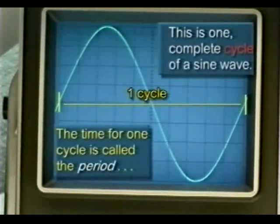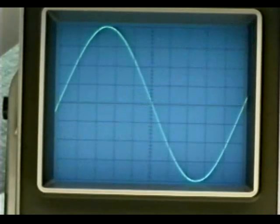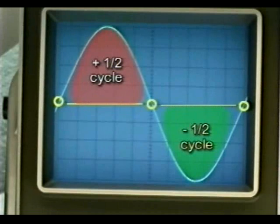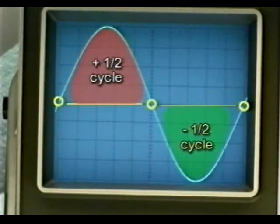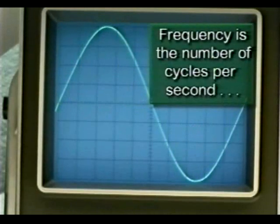The time needed to complete one full cycle is called the signal's period. The period of the waveform is measured in seconds, but could be measured in milliseconds, microseconds, or nanoseconds. We can divide the full sine wave cycle into a positive half cycle and a negative half cycle. Any point of the signal that goes above the center reference line is part of the positive half cycle, while anything below is part of the negative half cycle. Frequency is simply the number of cycles per second.